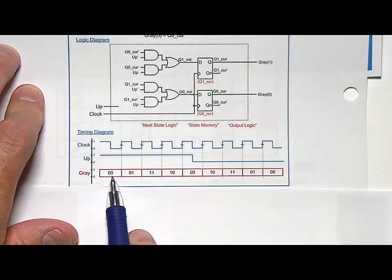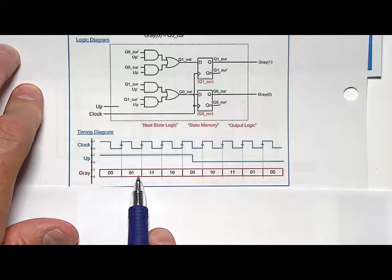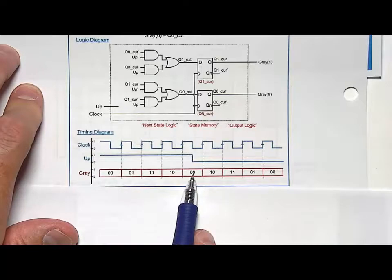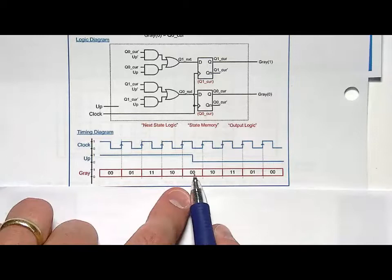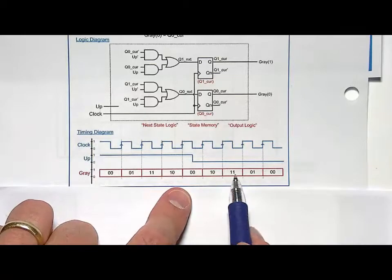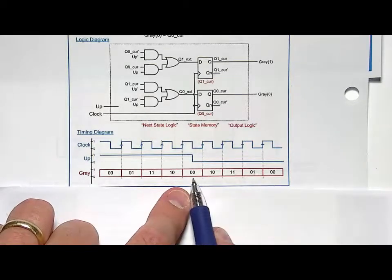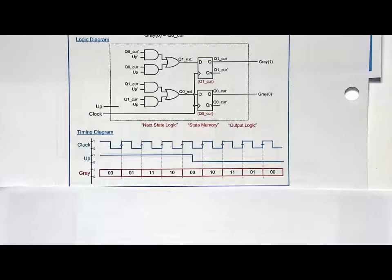And then finally, if you look at the way this operates, simply when up is a one, it counts in a gray code fashion: 00, 01, 11, 10, 00. Then when it goes down to a zero on up, I count backwards, so 00, 10, 11, 01, 00. So it's a backwards gray code counter. So that's a two-bit gray code up-down counter.